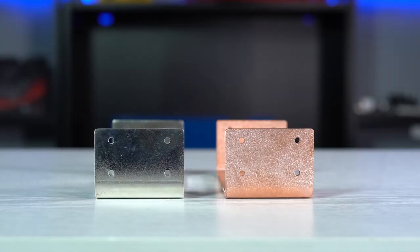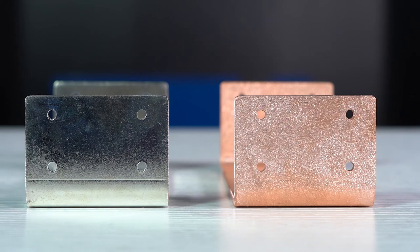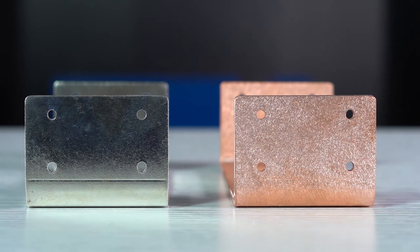After your copper part has been tin plated, you'll notice the color change to a matte gray. The brightness of this color is going to be dependent on the material thickness, age of the tin solution, and the dipping time.